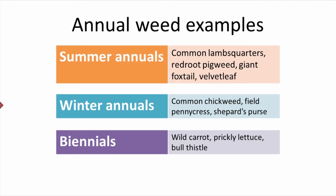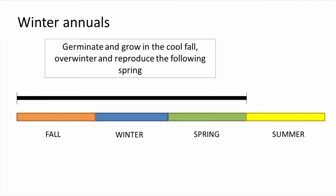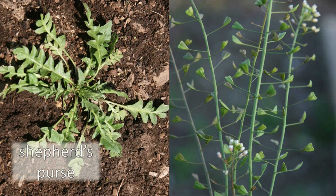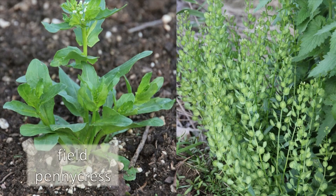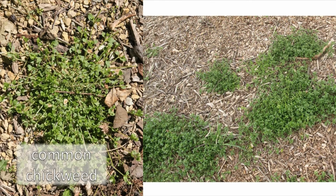Next up, winter annuals. Winter annuals germinate when the weather is cool in the fall. They grow enough to be able to overwinter and survive until the following spring, when they re-sprout and reproduce. Some examples of winter annuals include shepherd's purse, field pennycress, and common chickweed.